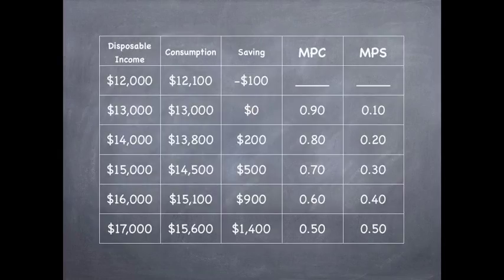In the chart, we have disposable income, consumption, saving, MPC, and MPS. The first row has $12,000 for disposable income, $12,100 for consumption, negative $100 for savings, and no values yet for MPC and MPS.